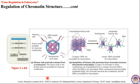In this diagram, the histone octamer surrounded by a DNA molecule is shown. These are the histone tails — the N-terminus and C-terminus of the histone proteins — where chemical modifications occur. Depending on the modifying enzyme: if it is histone acetyltransferase, acetylation occurs; if the modifying enzyme is histone deacetylase, deacetylation occurs.